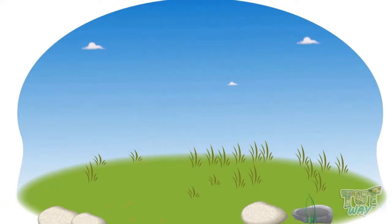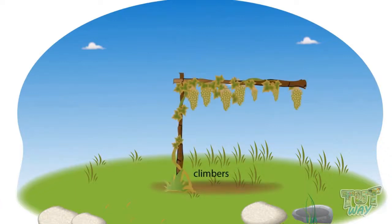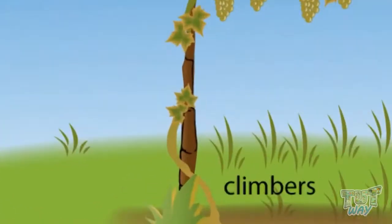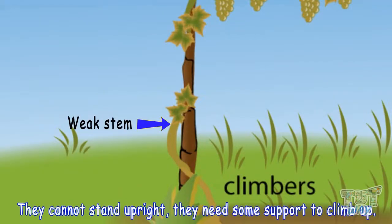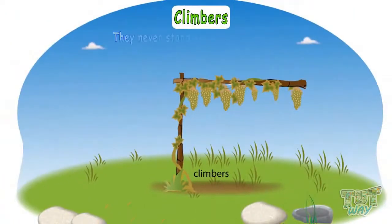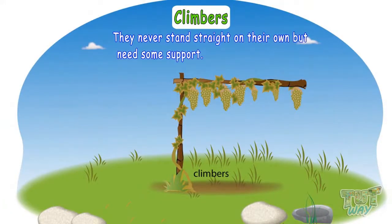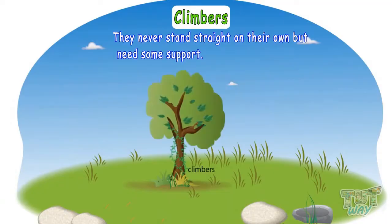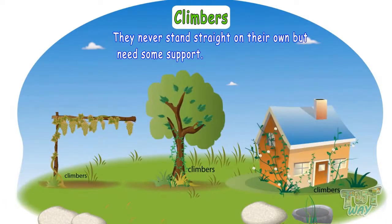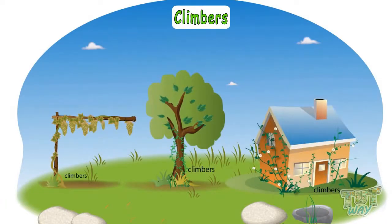Now let's see some climbers. Climbers: plants that have very weak stems and they cannot stand on their own. They need support to climb up and are called climbers. That is, they never stand straight on their own but need some support like some other tree or some stick to climb up. Climbers climb up trees and houses and grow that way.